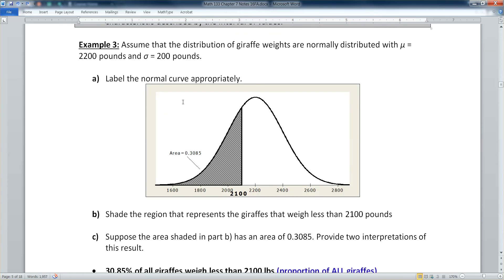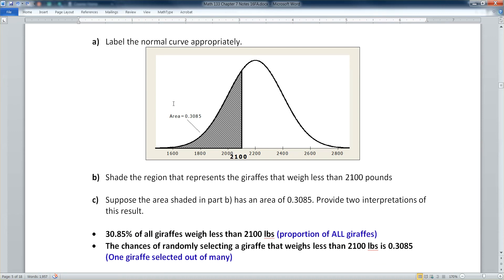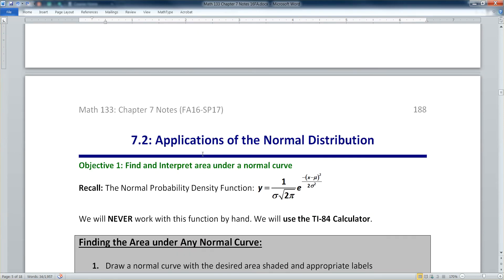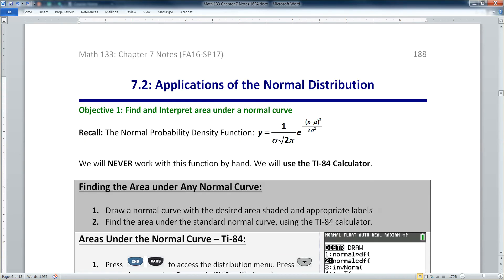We had this example here of the giraffes, and we found that this number here was 0.3085, and that meant that 30% of giraffes are in this weight, and so on. And the question is, where does the 0.3085 come from? Well, that's what we're going to do in section 7.2. We're going to learn how to find that area.